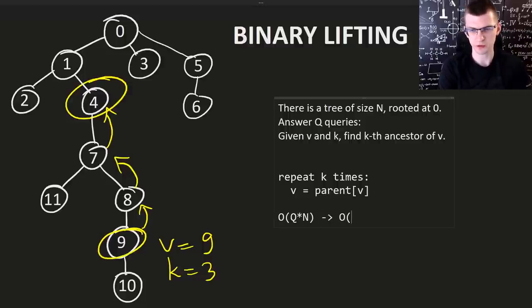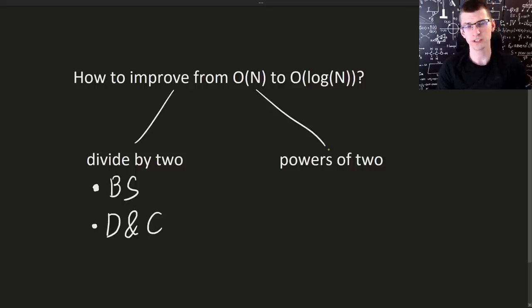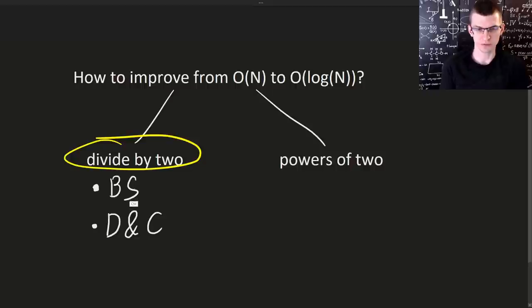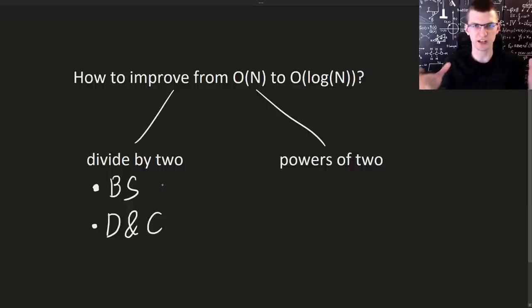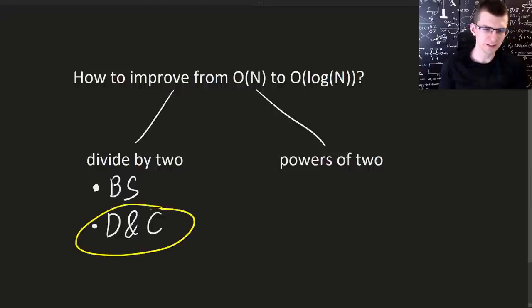We want to speed this up. There will be some pre-processing and then for each query we solve it in logarithmic time. Binary logarithm of n which is of course much faster. How do we usually get logarithm in the complexity? Almost always we get it by dividing n multiple times by 2 and the most common example is binary search obviously. Divide and conquer is also some example. Then it's usually n log n and not really logarithmic but it's similar also about dividing in the middle. But not always it works and this is one example of it.